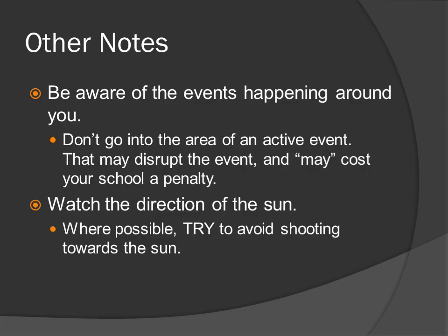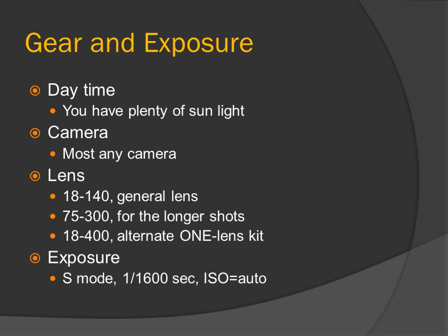Other notes: be aware of the events happening around you. Don't go into the area of an active event — that may disrupt the event and cost your school a penalty. Watch the direction of the sun; where possible, try to avoid shooting towards the sun. Gear and exposure: track and field is a daytime event with plenty of sunlight. Camera: most any camera. Lenses: 18-140 general lens, 75-300 for longer shots, or an 18-400 as a one-lens kit. Exposure: S mode, shutter priority, 1/1600th of a second, ISO auto.